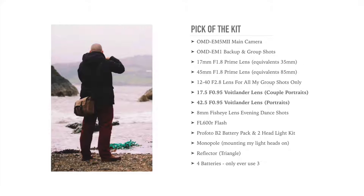Now let's talk about equipment — what I use on the day. I'm an Olympus ambassador and I like to keep it small. The bag you can see me with holds everything. I do have an assistant with me the majority of shoots, but don't let that distract you if you haven't got one — you don't need them. As time goes by and your weddings get bigger, doing group shots of 200 to 250, you're going to need one. My main camera is the OM-D E-M5 Mark II, and I have a backup bag in the car with my OM-D E-M1.